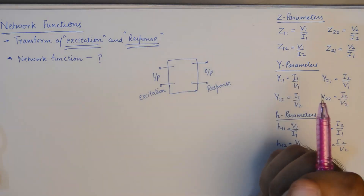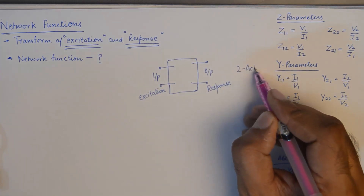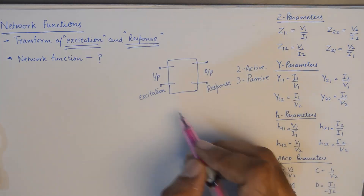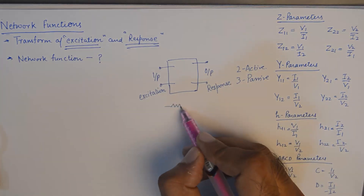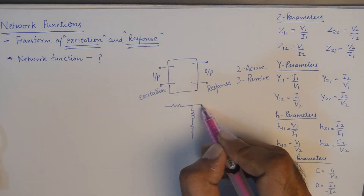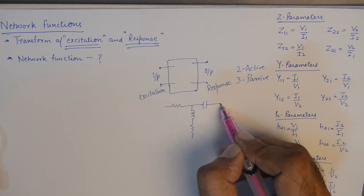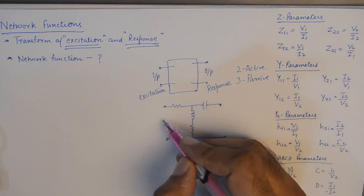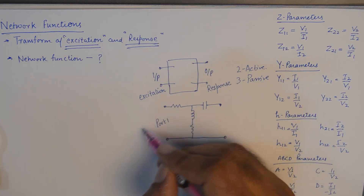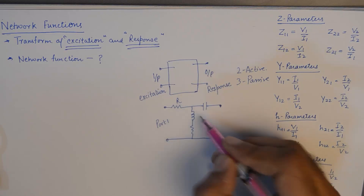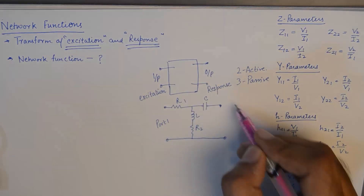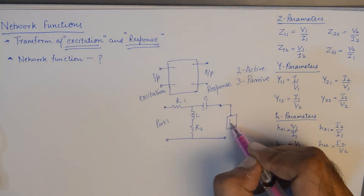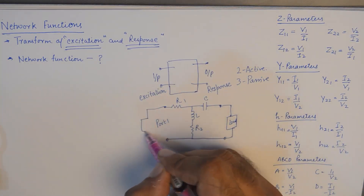The network will at most contain five different elements — two of them being active elements and three being passive. A typical two-port network could look something like this: at port one we could connect a voltage source or current source, and the network could contain R, L, R2, and C elements, further connected to some load.